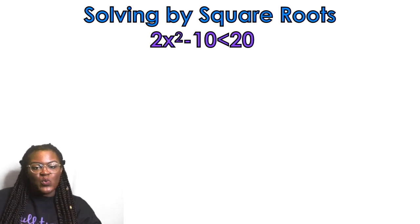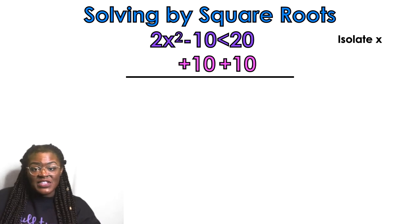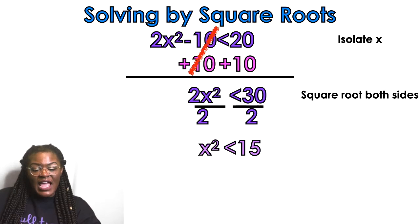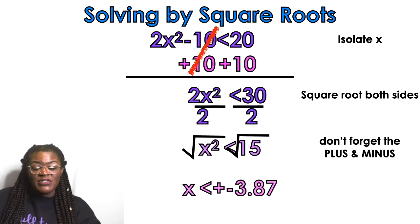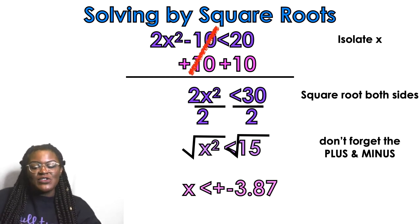One more: 2x squared minus 10 is less than 20. This one's not going to come out pretty — it's going to come out as an ugly decimal. If you're feeling confident, pause the video and try this one on your own. Isolating x: add 10 to both sides, getting 2x squared is less than 30. Divide both sides by 2, so x squared is less than 15. Take the square root of both sides — don't forget your plus or minus. The square root of 15 is approximately 3.87. I just rounded to the nearest hundredths place, but the decimal goes on forever with no pattern because it's irrational. So the positive 3.87 and negative 3.87 are my two boundary values.